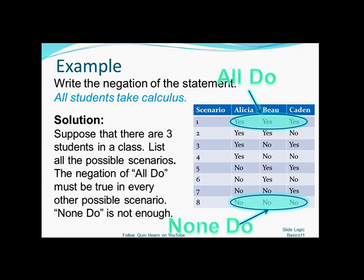Now a lot of times people think the negation of all do is to say that none do, but notice that only covers one other scenario, the last one where nobody does, and leaves out all the ones in between.